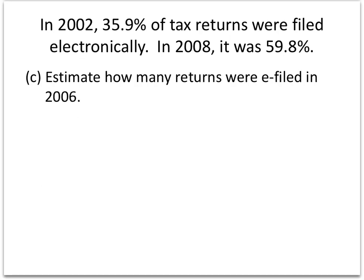Now let's look at an interpolation problem. The difference between interpolation and prediction is that a prediction asks us to make an estimate beyond the data we have — we had data from 2002 to 2008 and predicted 2015. Interpolation finds an estimate in between the data we have, such as estimating how many returns were e-filed in 2006. Since 2006 is between 2002 and 2008, we call it interpolation.